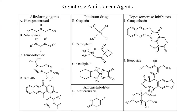Some agents that have genotoxic effects include alkylating agents, platinum drugs, topoisomerase inhibitors, etc. However, these drugs can also be used as anticancer agents to break down the DNA of cancerous cells.